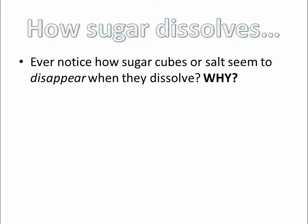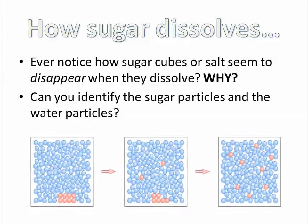So how can we explain that in terms of particles? We understand the way that the liquid particles are moving around each other—the water particles are moving around each other—but the sugar particles, why do they actually disappear?